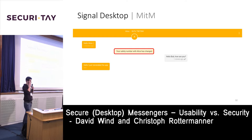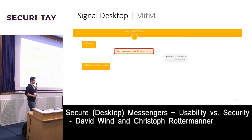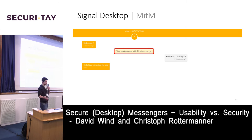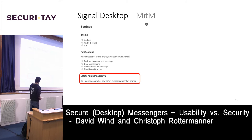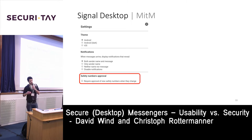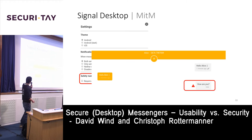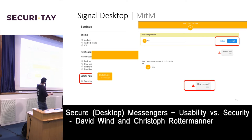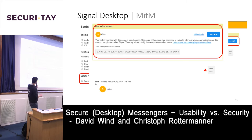When we man-in-the-middled communication with Signal Desktop, by default you get a notification: 'Your safety number has changed,' but it's non-blocking — you can continue and send messages anyway. If you want blocking behavior, you can enable the 'safety numbers approval' feature, which requires you to approve the safety number before sending again. With this feature enabled, after a man-in-the-middle attack you get the red warning, must accept the new key, verify the safety number, and then you can proceed.